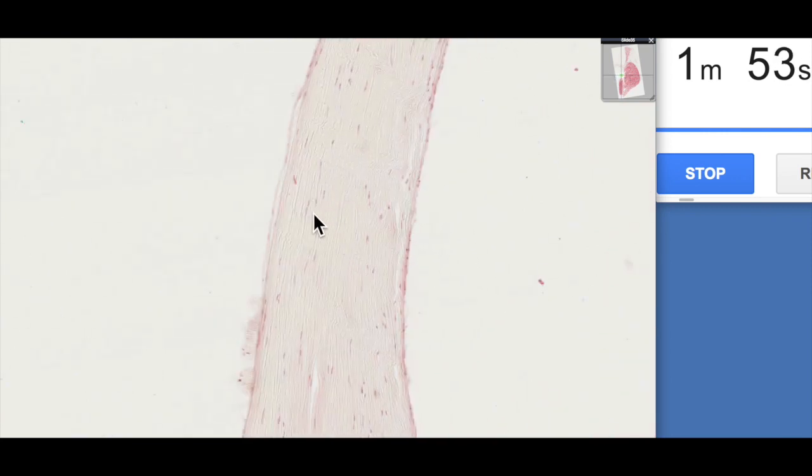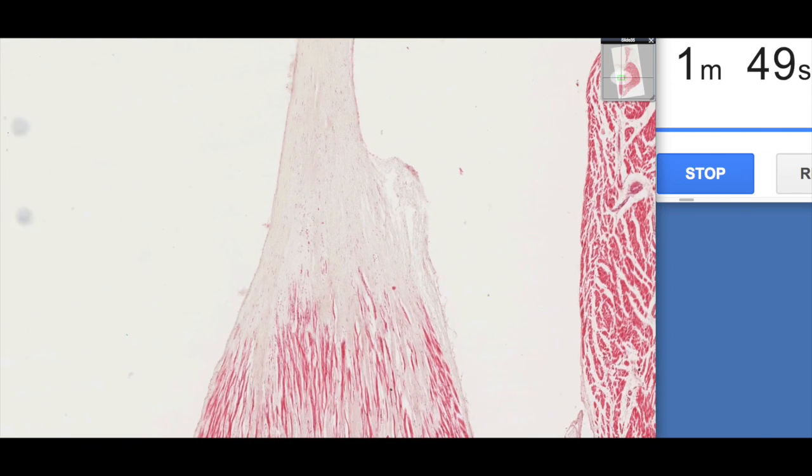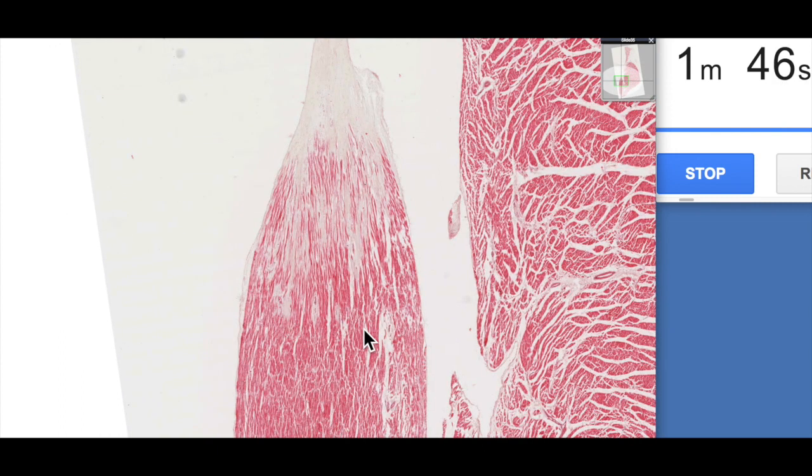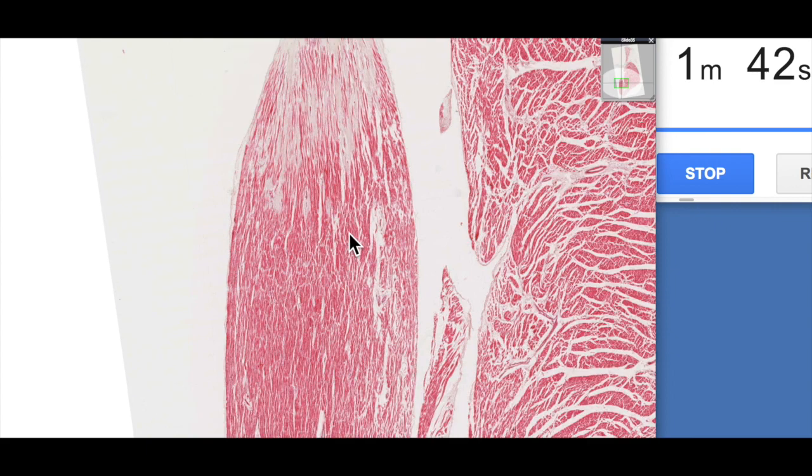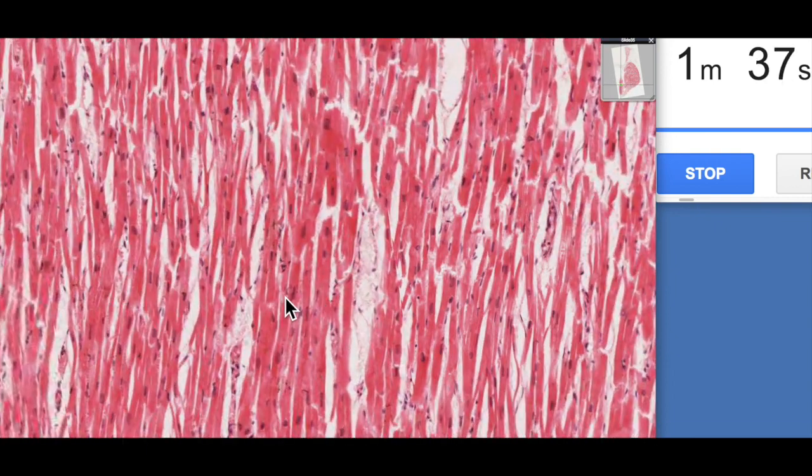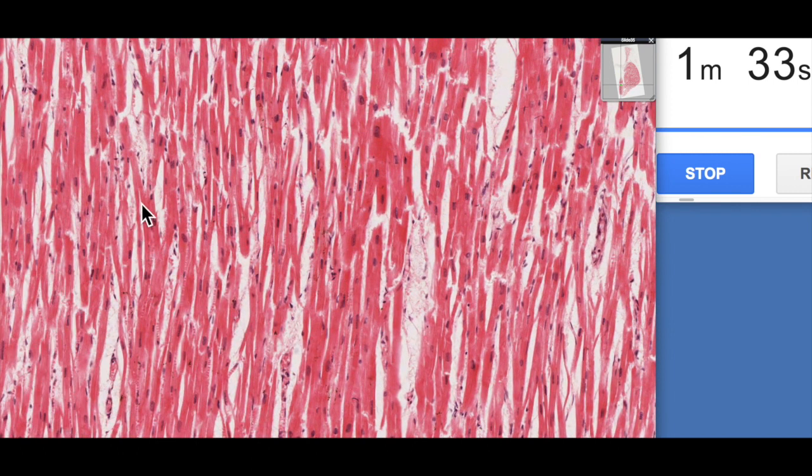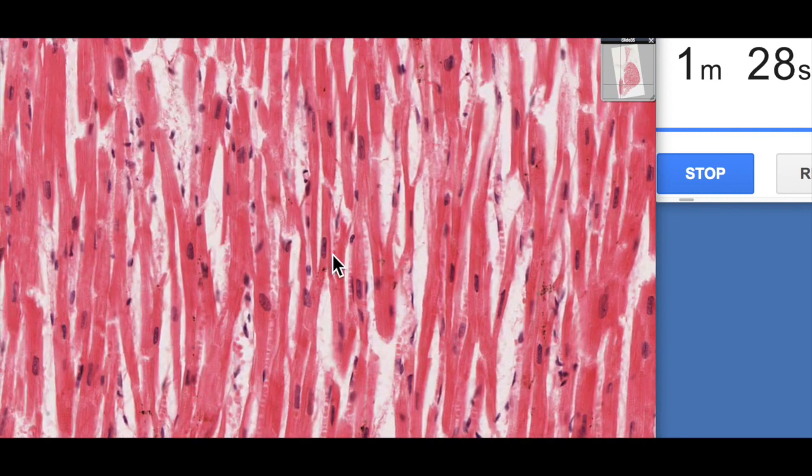This is a papillary muscle, an extension of the ventricular wall. It's made up largely of cardiac muscle cells. If we zoom in here you can see the branching nature of the cardiac muscle cells. If we zoom right in we'll be able to see some striations, you might be able to make them out here. Nice little capillary here.